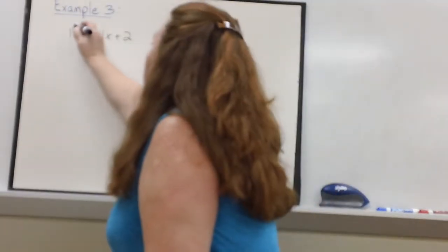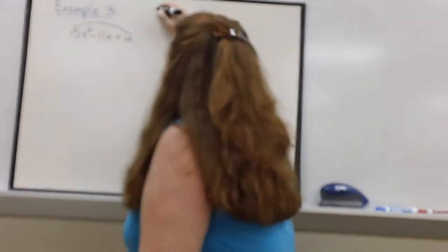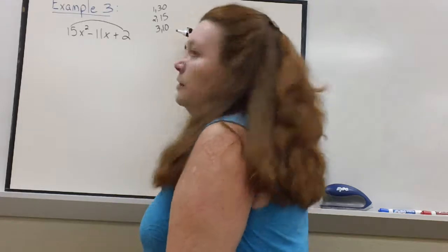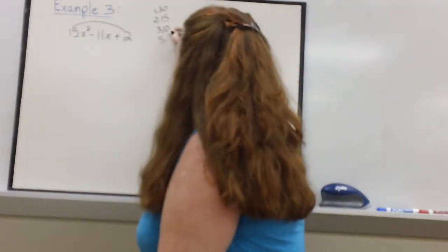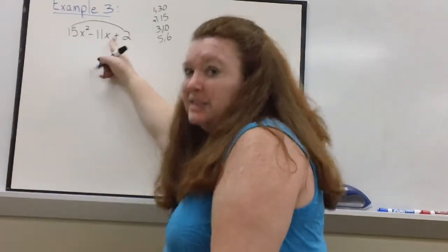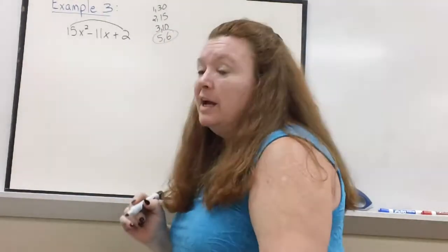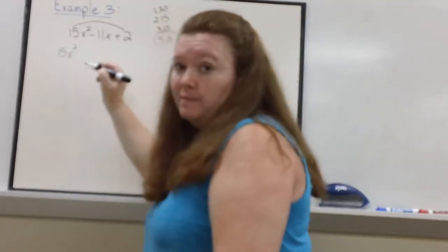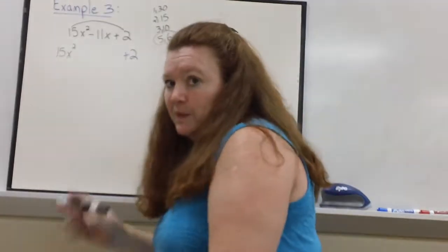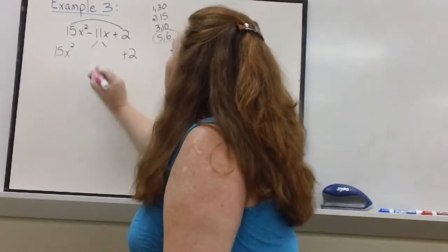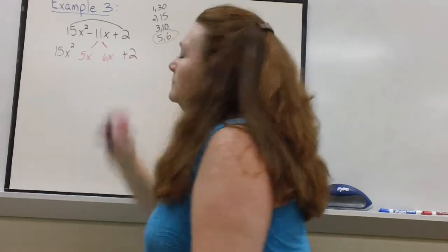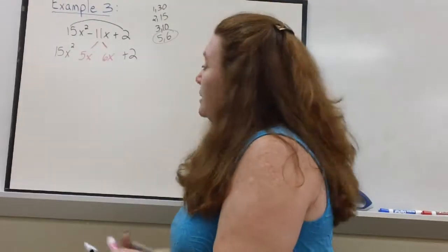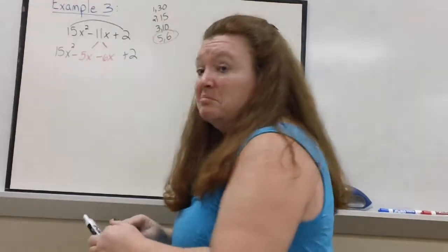I'm going to ask myself, what multiplies to give me 30? 1 times 30, 2 times 15, 3 times 10, 5 times 6. Which pair of numbers adds to give me an 11? Right there. I'll get to the signs later, but as long as I get the right numbers, I'm okay. So, we're going to split the 11 into a 5x and a 6x. Now, the question is, how do I get a negative 11 out of a 5 and a 6? Well, that would be a negative 5 and a negative 6.